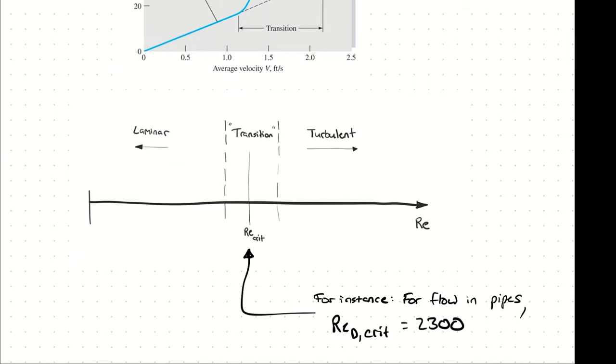For our purposes, the critical Reynolds number is a firm line in the sand. Any flow with a Reynolds number less than the critical Reynolds number is considered laminar, and any flow with a Reynolds number greater than the critical Reynolds number is considered turbulent.